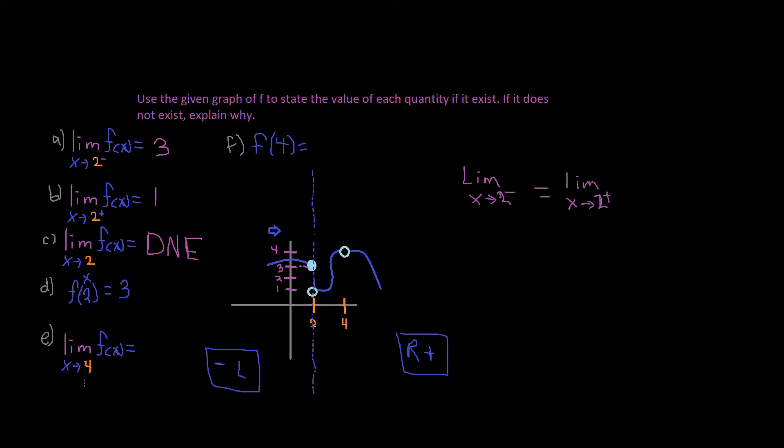Alright, so the next one says the limit as x approaches 4. So let's see. So where are we going? Okay. We're heading that way. It's a 4. So it's open right here. But it appears to be 4. So 4.